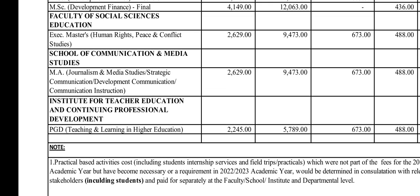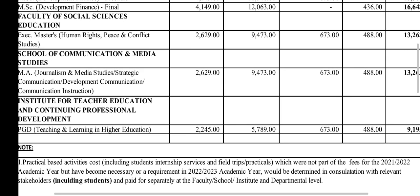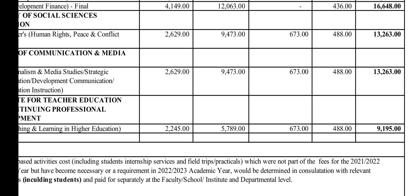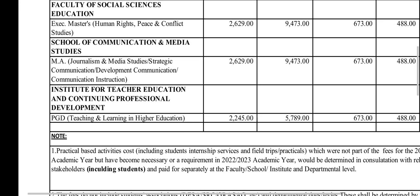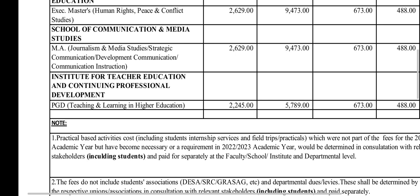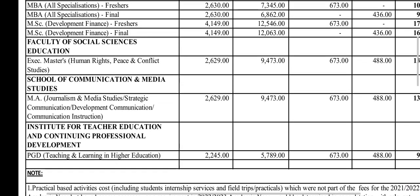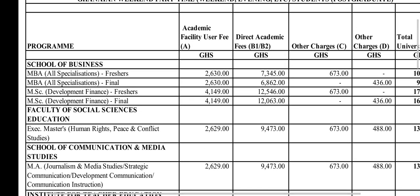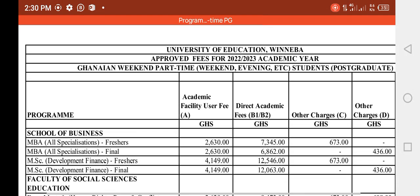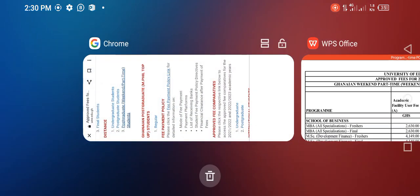School of Communication and Media — we have MA in Journalism and Media Studies, Strategic at 13,263. So that brings us to the end. These are obviously the fee structures for the distance and weekend programs. Thank you for watching and kindly subscribe. Thank you.